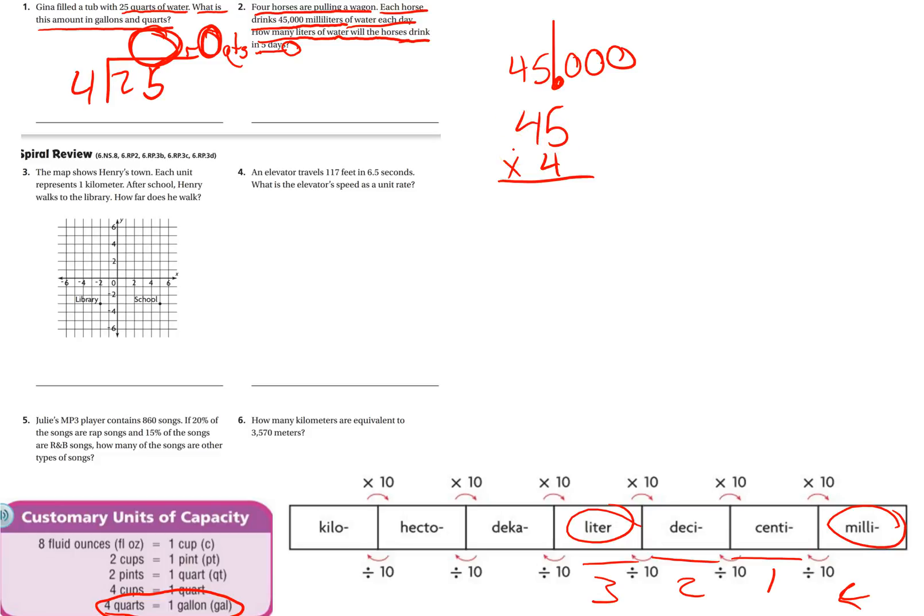Because now I have liters, which is what we want. 45 liters, and there's four horses. So four times five is twenty, four times four is sixteen plus two is eighteen, so a hundred and eighty. But that's just for one day, so now we have to multiply that times the number of days, and this will be your final answer.